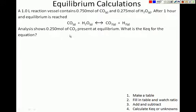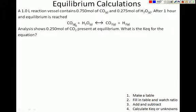Let's read our question and then make a table. We have a one liter reaction vessel that contains a certain number of moles of carbon monoxide and moles of water. After one hour, an equilibrium is reached. The equilibrium is: carbon monoxide plus water forming an equilibrium with carbon dioxide and hydrogen gas.